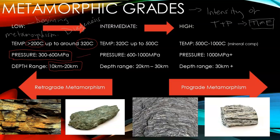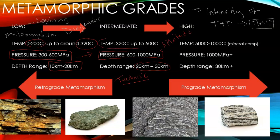If this rock is further buried or under more overburden, or there's some sort of subduction or subsidence or tectonic activity, then if the rock goes deeper to about 20 to 30 kilometers, it'll encounter more pressure and more overburden. The pressure is lithostatic. The temperatures will increase from 320 degrees Celsius to about 500 degrees Celsius, and this will be intermediate metamorphic grade.